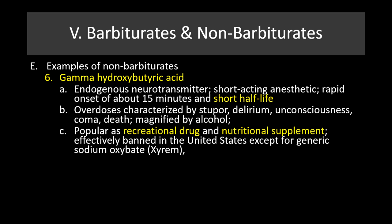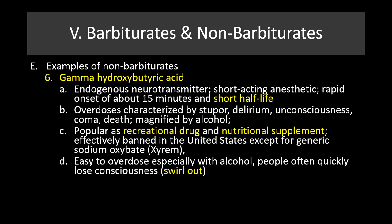GHB is popular as a recreational drug and also as a nutritional supplement. It's effectively banned in the United States except for a generic Xyrem version. It's a very popular recreational drug, oftentimes used in combination with methamphetamine, which can be particularly dangerous. It is easy to overdose, particularly in combination with alcohol. People will often quickly lose consciousness — this is often called 'swirling out' because GHB is referred to as 'swirl.' That kind of sudden unconsciousness can happen very quickly, and this drug has very often been used as a date-rape drug.